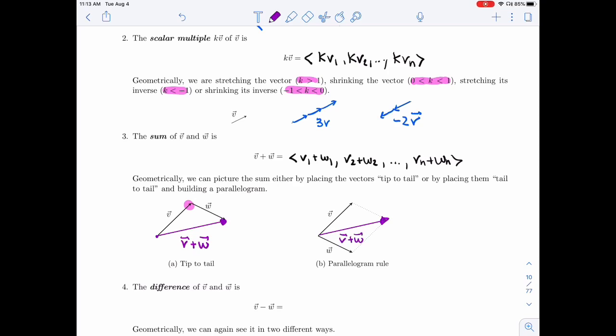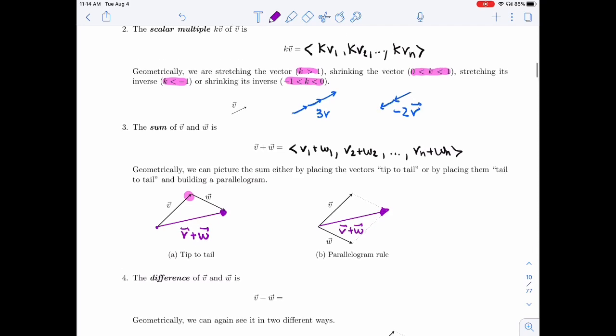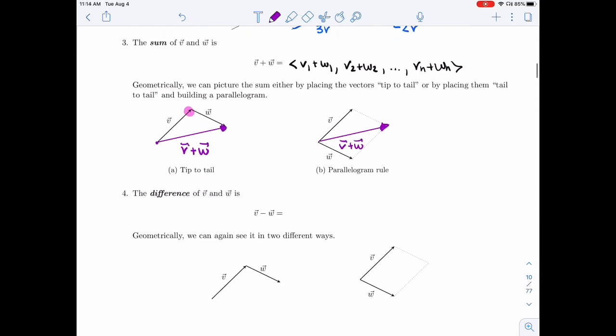So this is called the parallelogram rule. If I put V and W, we'll call it tail to tail, the two tails together. Then V plus W would be the diagonal of the parallelogram that starts at the same point. All right, so that's the sum.